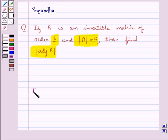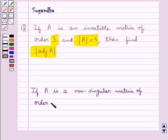We have a property according to which, if A is a non-singular matrix of order n, then |adj A| = |A|^(n-1).